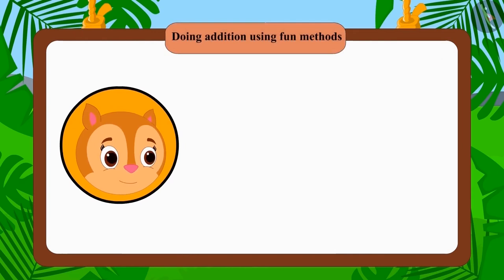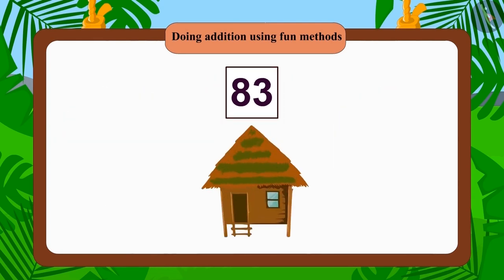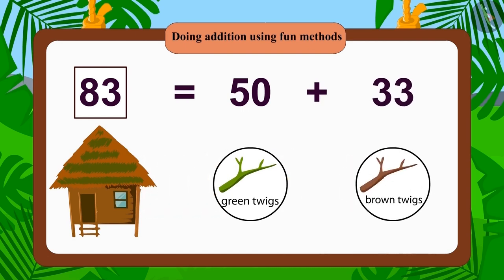Chanda collected 83 thin twigs for her house and built her own small house. She first used 50 green twigs and 33 brown twigs, but Chanda did not like the design of the house.